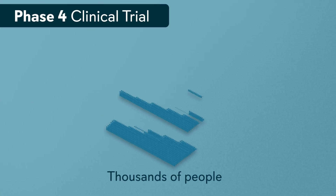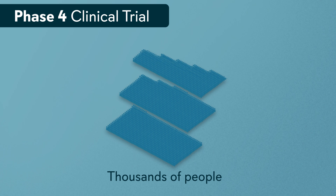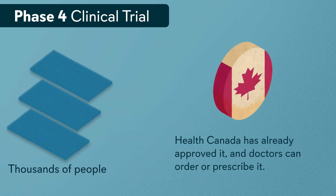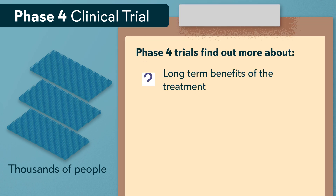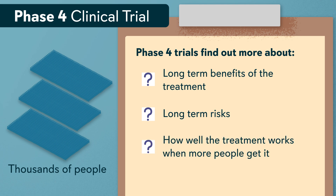Phase four trials may involve thousands of people. When a treatment reaches phase four, Health Canada has already approved it and doctors can order or prescribe it. Phase four trials find out more about long-term benefits of the treatment, long-term risks — for example, rare side effects — and how well the treatment works when more people receive it.